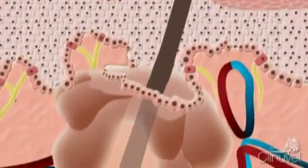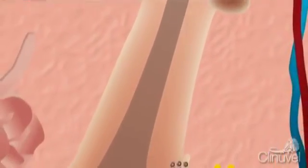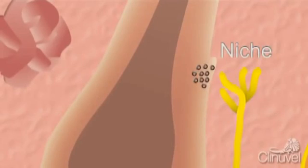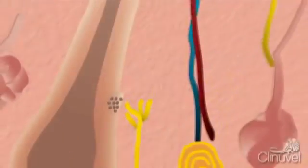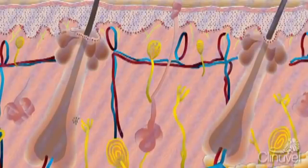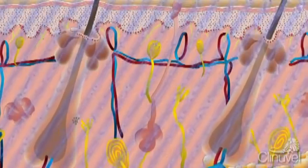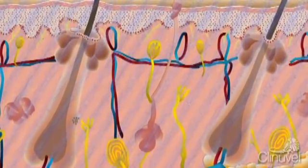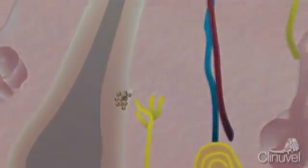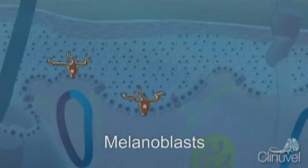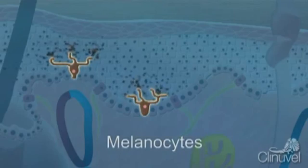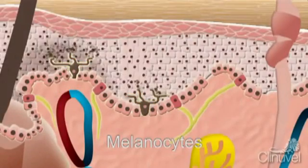Narrowband UVB therapy can stimulate functional melanocytes found in the hair follicles. The hair follicles possess a special area, known as the niche, where the melanocyte stem cells, or immature melanocytes, are located and maintained in a specific environment. These cells can be preserved from the factors that destroy skin melanocytes in vitiligo, such as the immune system. When stimulated by Narrowband UVB, the stem cells in the hair follicle mature to melanoblasts, which activate, proliferate and migrate from the hair follicle to the epidermis, becoming melanocytes — fully mature, pigment-producing cells.